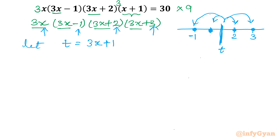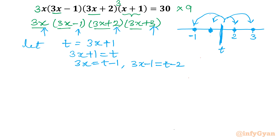From t = 3x + 1, we can write: 3x = t minus 1; 3x minus 1 = t minus 2; 3x plus 2 = t plus 1; and the last bracket, 3x plus 3 = t plus 2. Simply put all the values — once your substitution is right, every term will come out right.